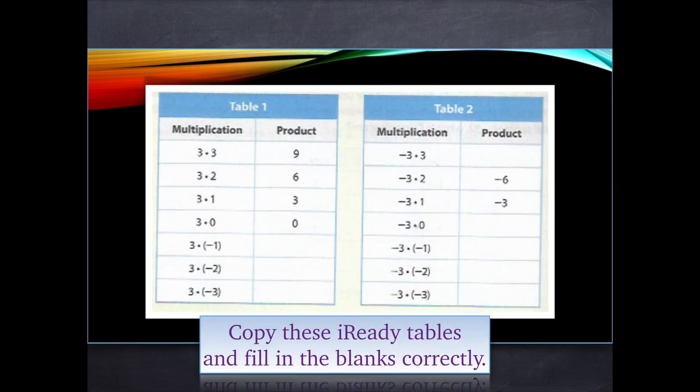So what I want you to do is copy both of these tables exactly as you see them. Write 3 times 3 on the left, 3 times 2 on the left, 3 times 1 in the left column, and the product, the result of that multiplication. And I know you know 3 times 3 is 9, and 3 times 2 is 6, etc. But we're learning to multiply integers.